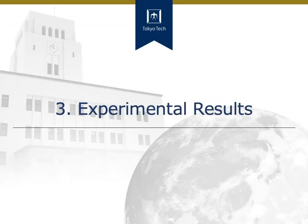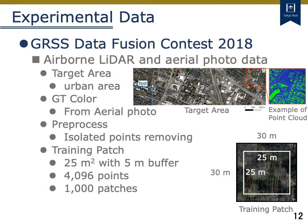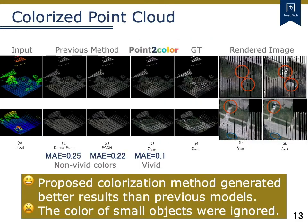I will talk about experimental results for the evaluation of our method. For the experiment, we used GRSS Data Fusion Contest 2018 data. The target area was an urban area shown in the upper figure. The ground truth color of the point cloud was assigned using the corresponding aerial photo. In addition, isolated points in the air and underground were removed. For training our model, we split it into small patches from the original large point clouds due to the limitation of GPU memory. We define the patch size as 25 meter square with 5 meter buffers for context information. Additionally, we subsample to the same number of points in each patch.